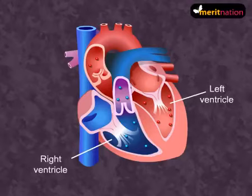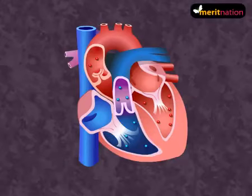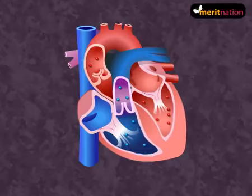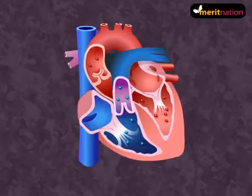Ventricular systole begins when the ventricles are filled with blood. The AV node, as shown here, picks up the signal and then conducts it throughout the ventricles. This stimulates ventricular contraction.